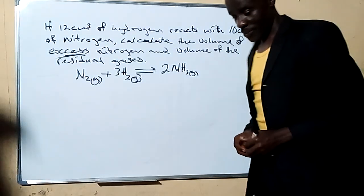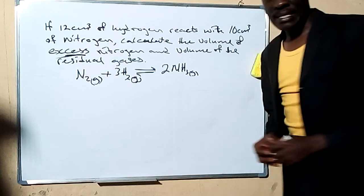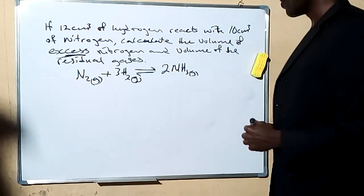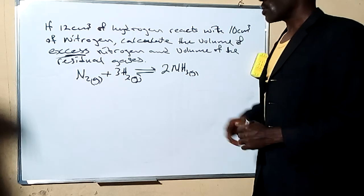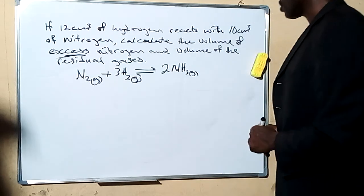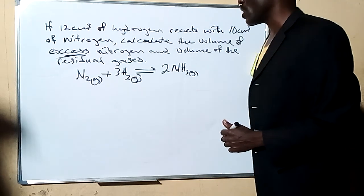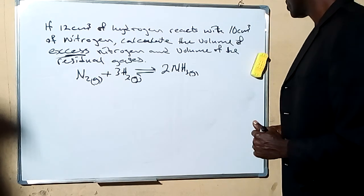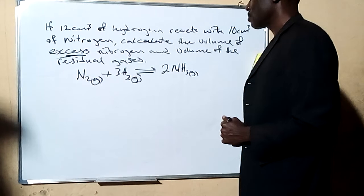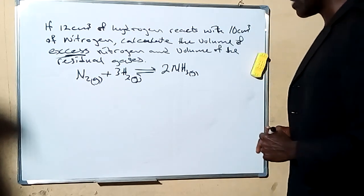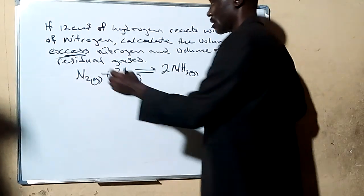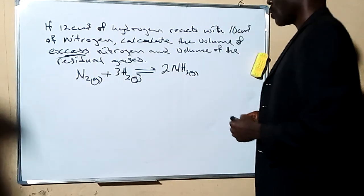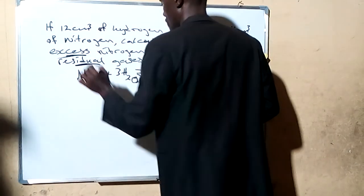Hello everyone. Welcome to another exciting moment in our studies. So we're going to look at the question here. The question says: if 12 cm³ of hydrogen reacts with 10 cm³ of nitrogen, calculate the volume of excess nitrogen and the volume of residual gases.